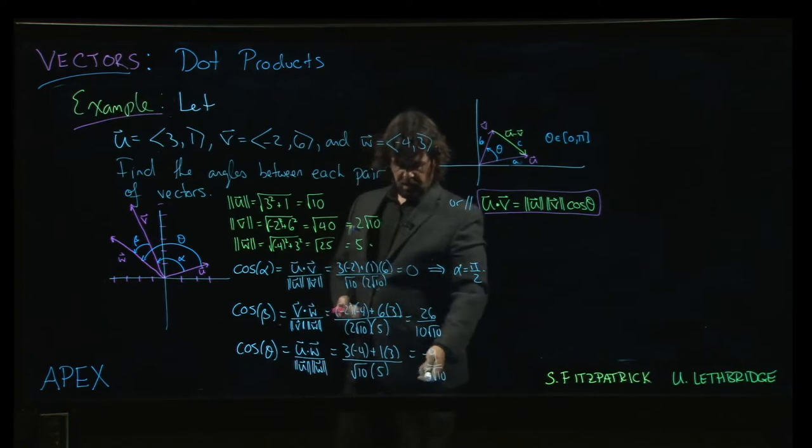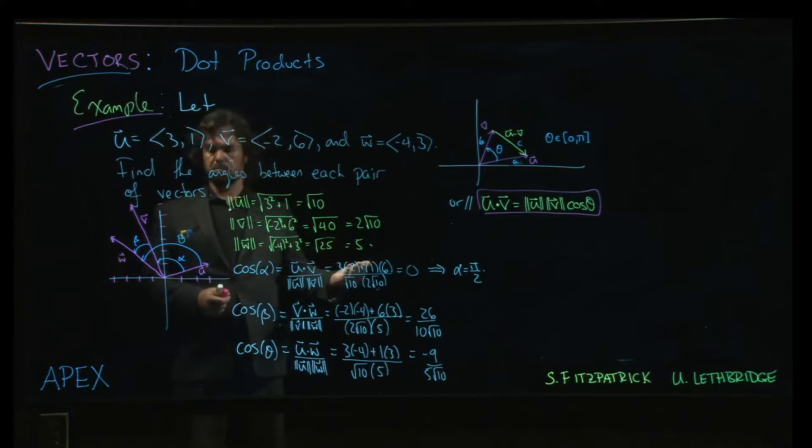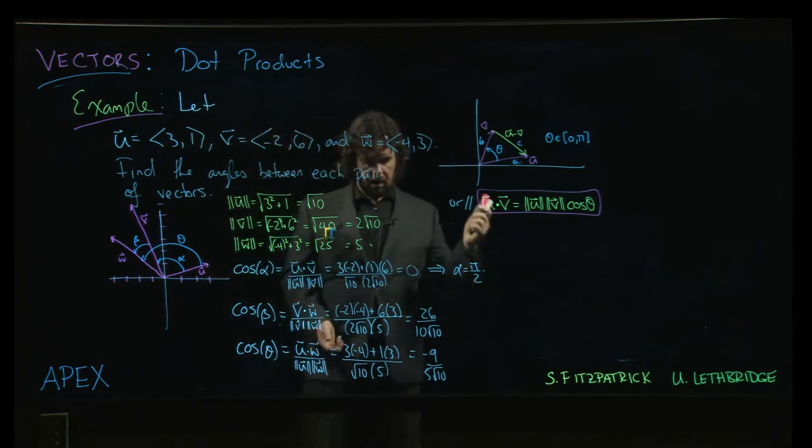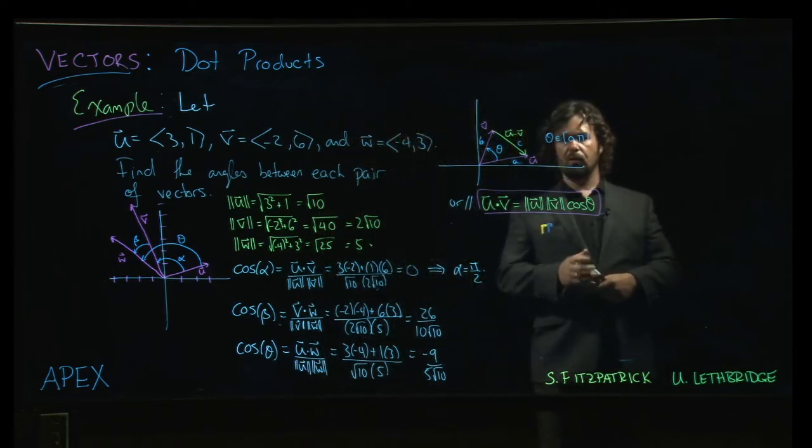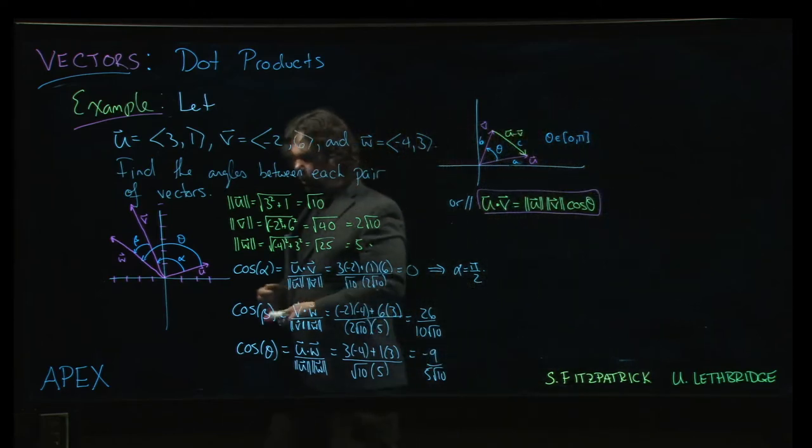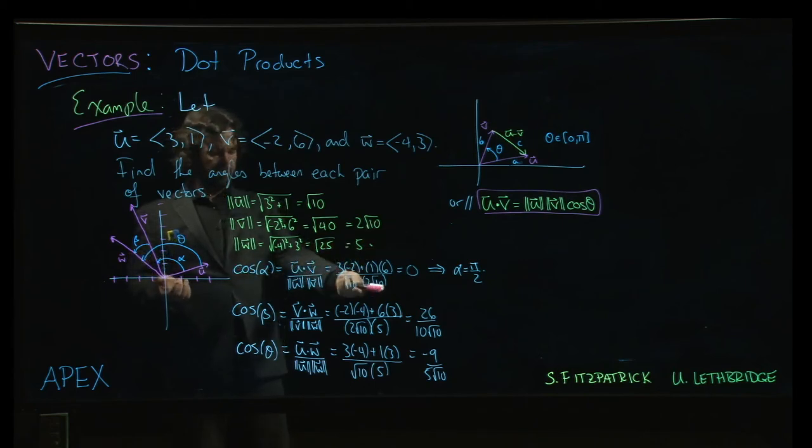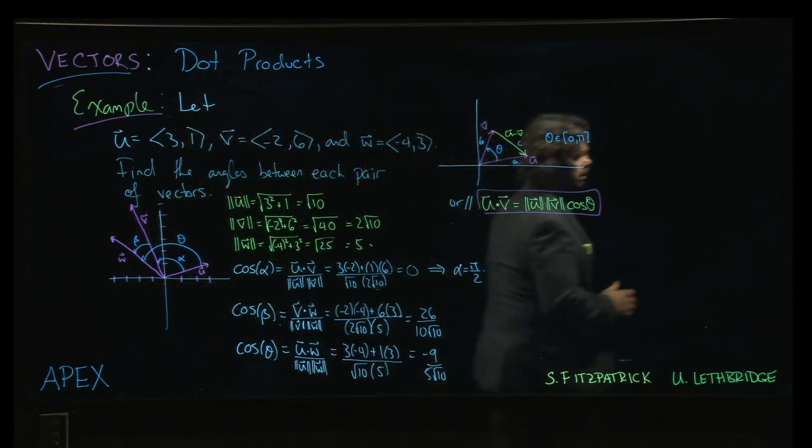And again, if we had a calculator, we could take that value, plug it in, use the inverse cosine button to get the angle. You can do that yourself if you're curious. But the one thing we could note is that we do get a negative value this time, right? And negative values for cosine correspond to angles in that second quadrant between pi over 2 and pi. So we do know that that has to be an obtuse angle. And again, we can see that in the picture, right? We have the right angle here. Theta is a bit bigger than a right angle. So we expect it to be obtuse. Whereas beta here we can see is less than a right angle, so acute, so we expect the positive value, which we get.